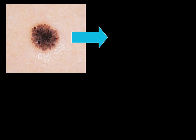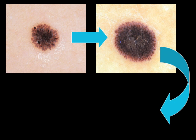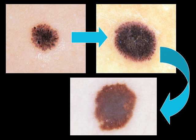Similarly, Spitz nevi with pseudopods, if sequentially followed, will enlarge in a symmetric fashion. Once the nevus enters senescence, the pseudopods are no longer visible, and the nevus will usually manifest a homogeneous pattern.